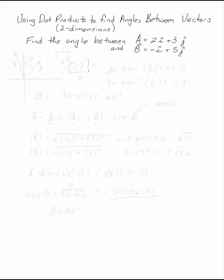Use the dot product to find the angles between the two vectors. A is 2i plus 3j and B is minus i plus 5j.